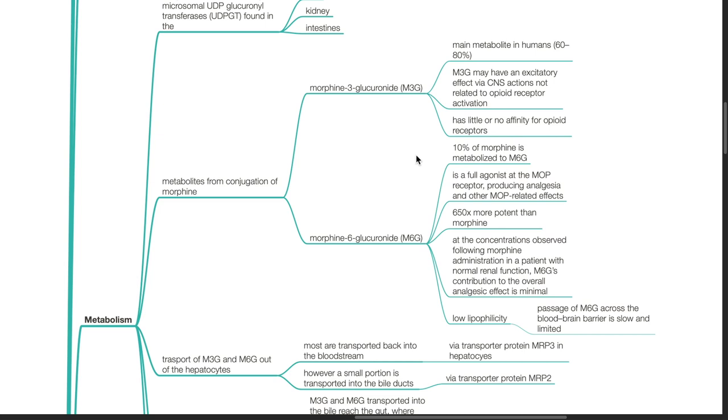M6G has low lipophilicity. Passage of M6G across the blood-brain barrier is slow and limited.